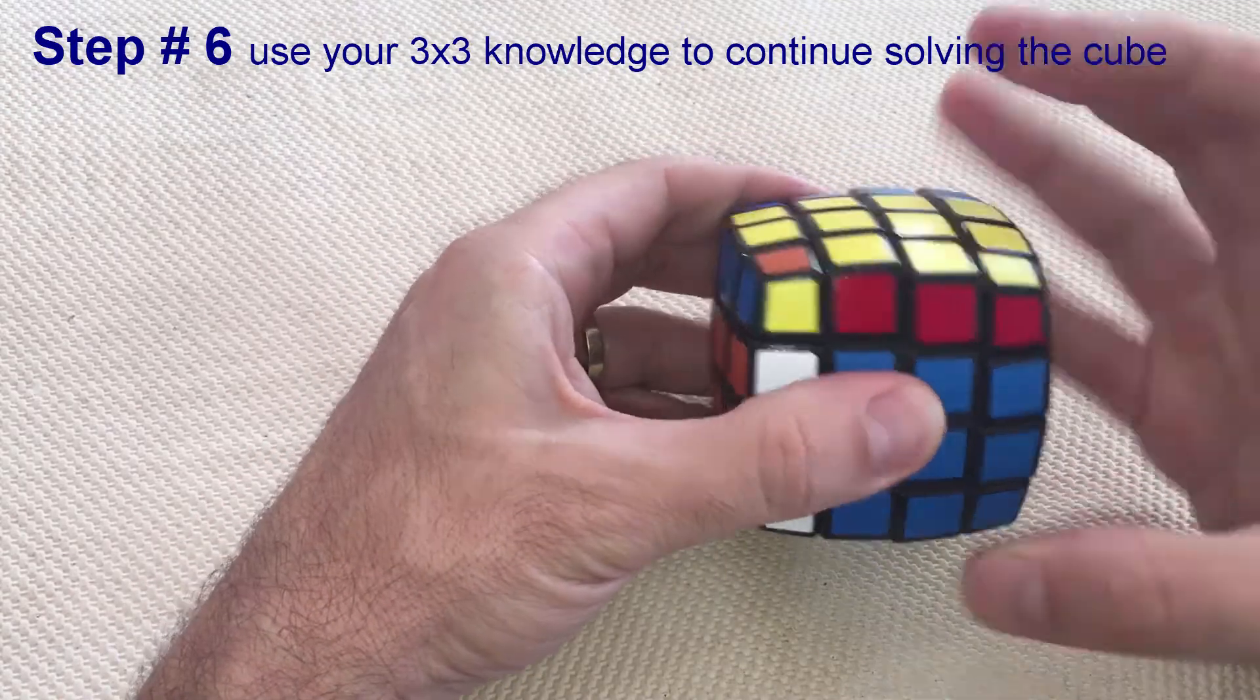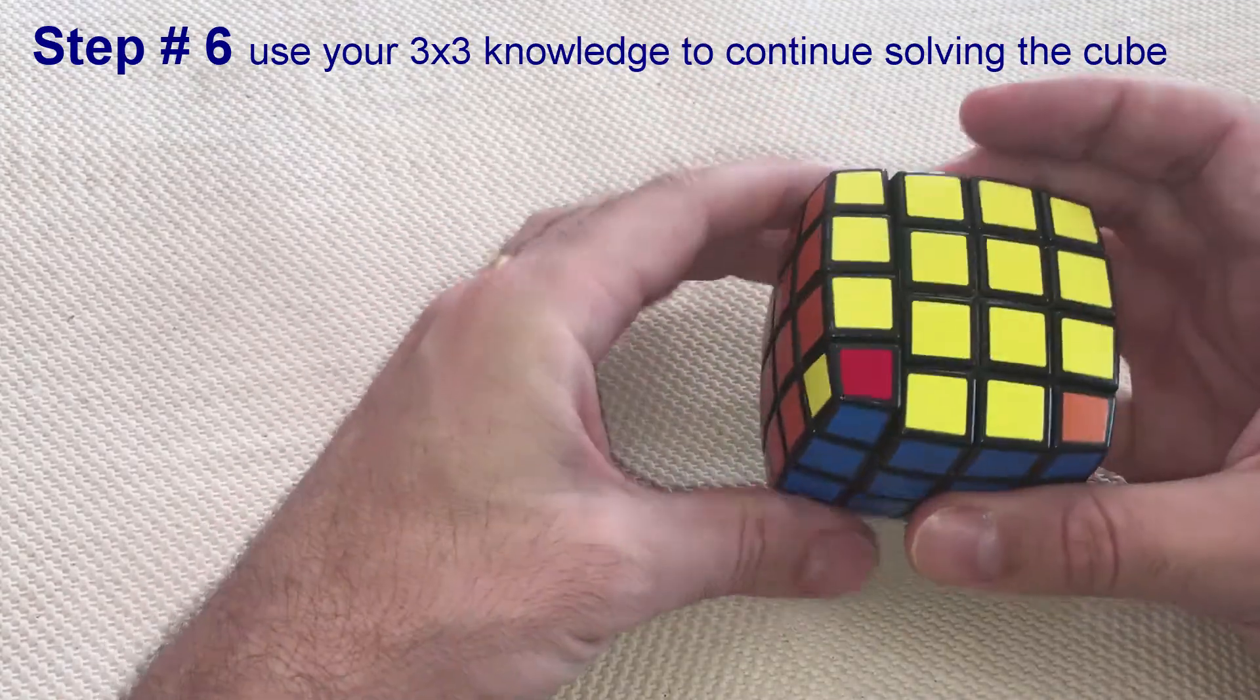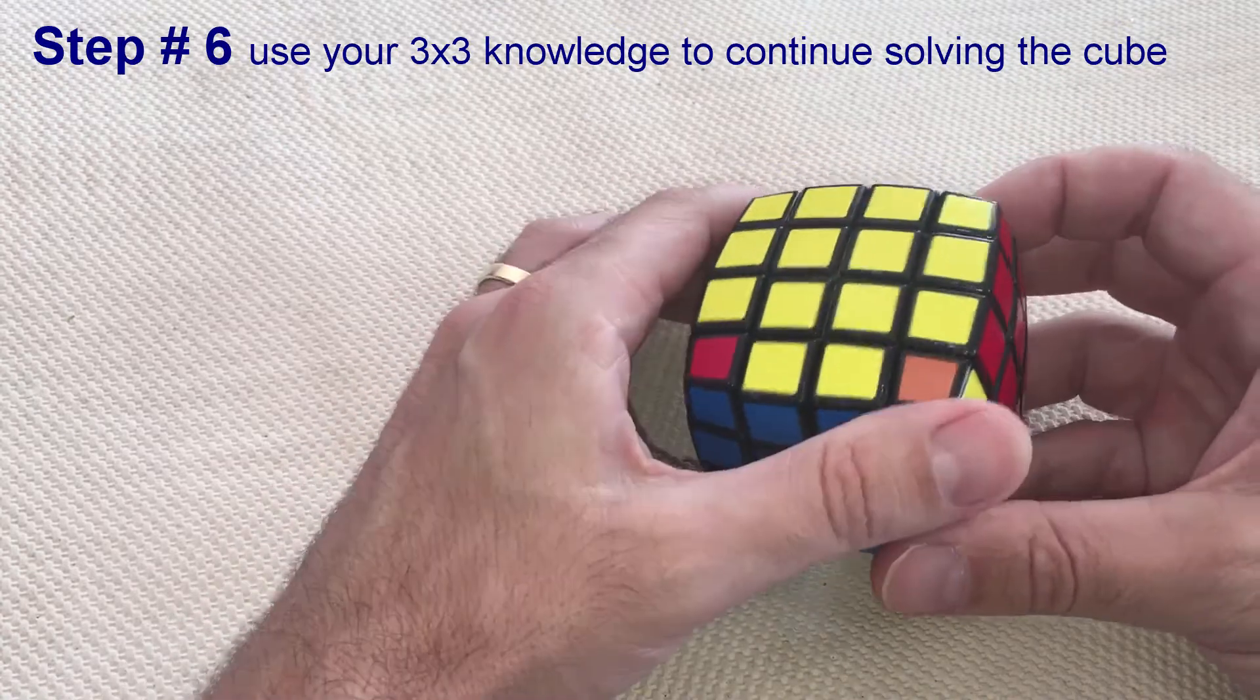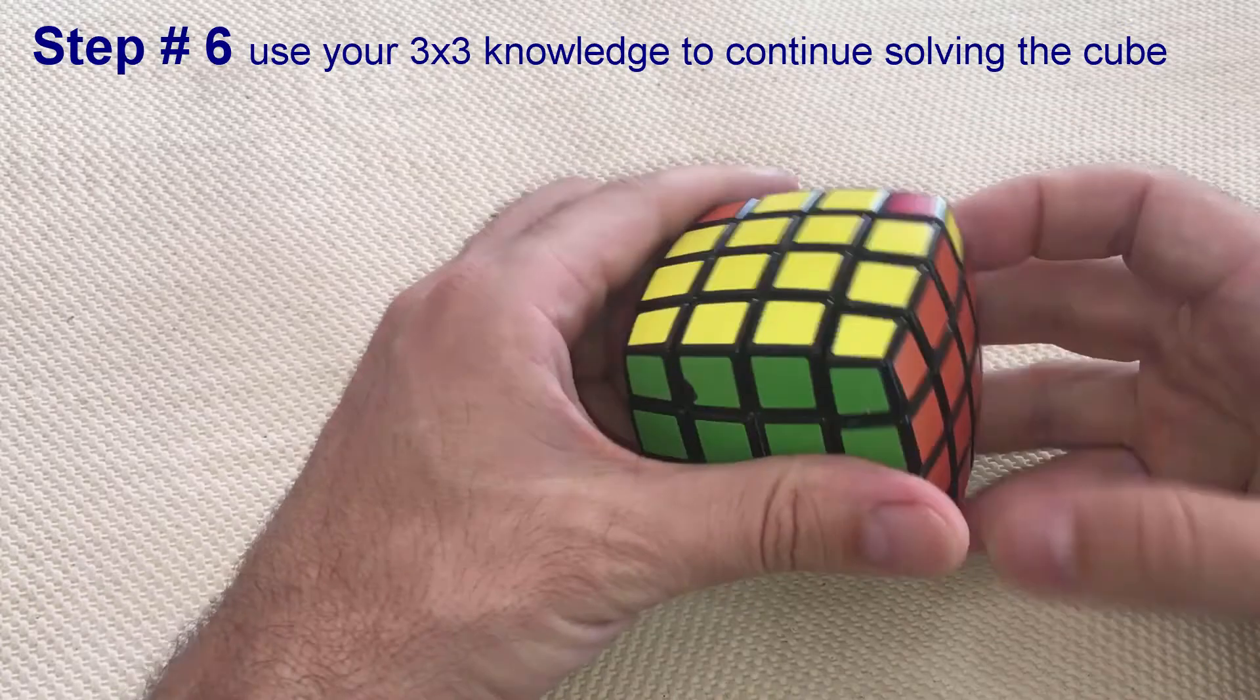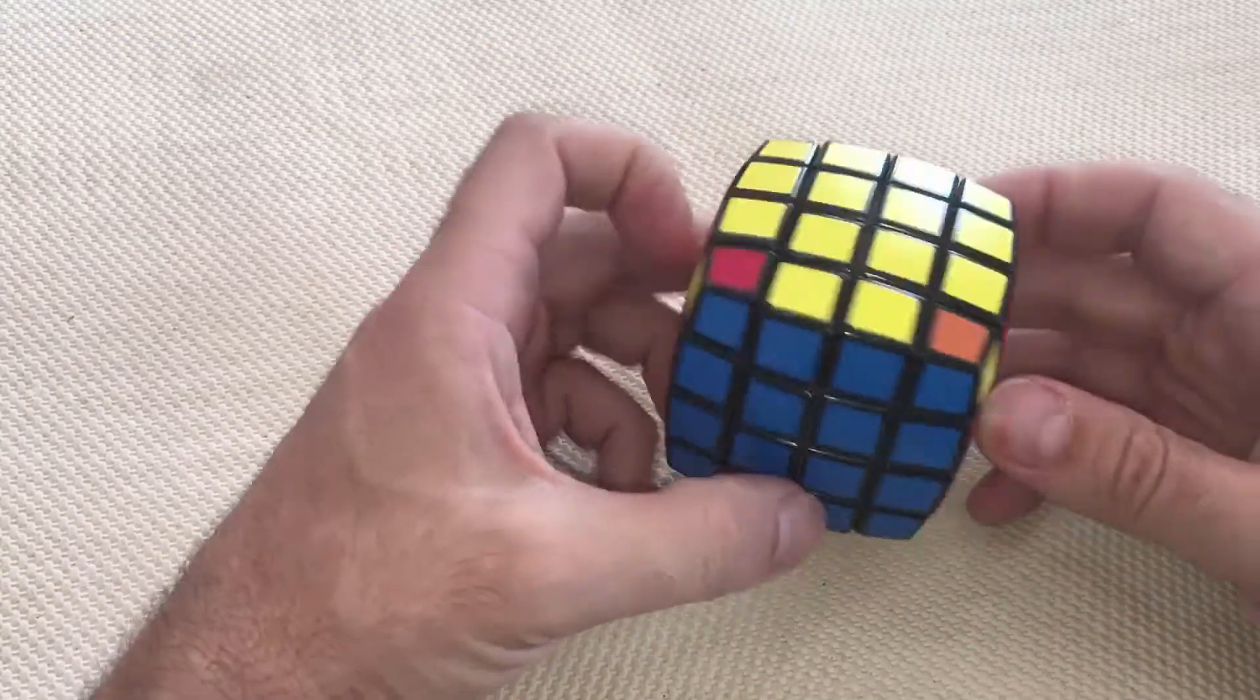Unfortunately, at the very end you can still find this situation: PLL, also known as corner parity. Let's solve it on the last step.